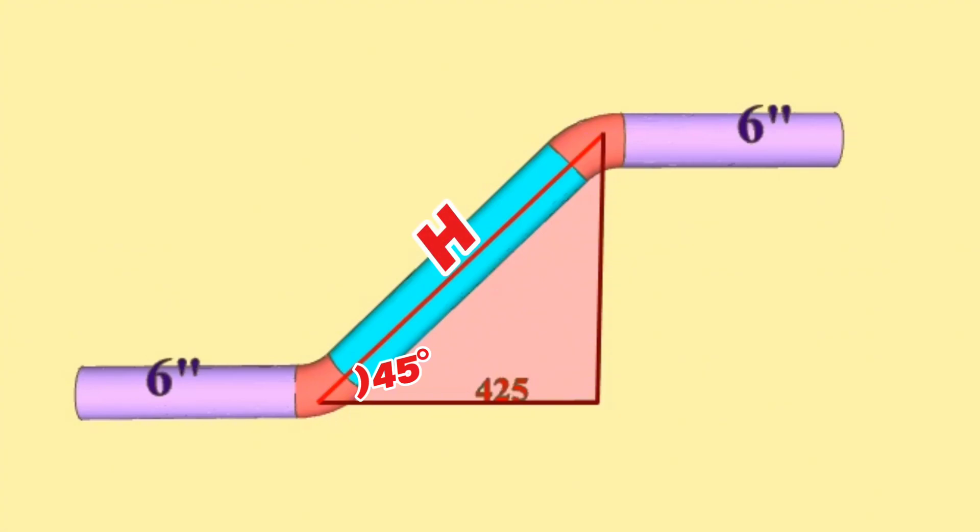Since one of the angles of this right triangle is 45 degrees, automatically the other angle will be 45 degrees and the other side will be 425 millimeters as well. In such situations, the length of the hypotenuse of an equilateral right triangle can be calculated in two easy ways.